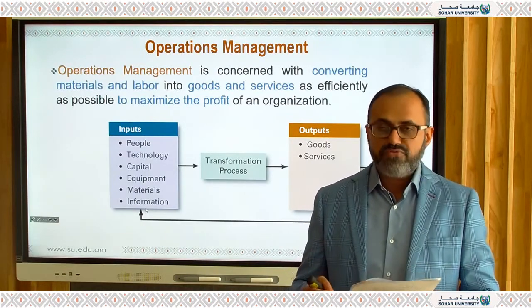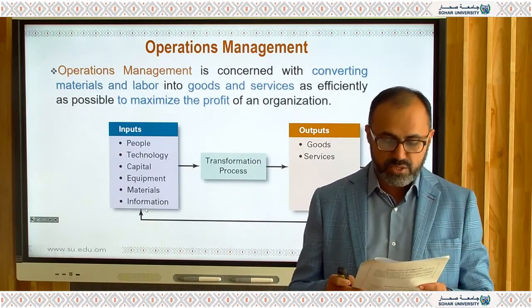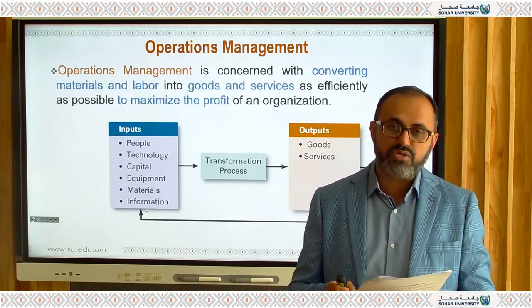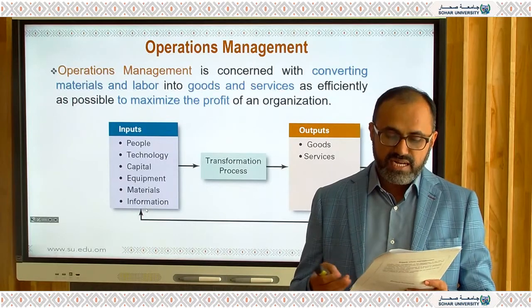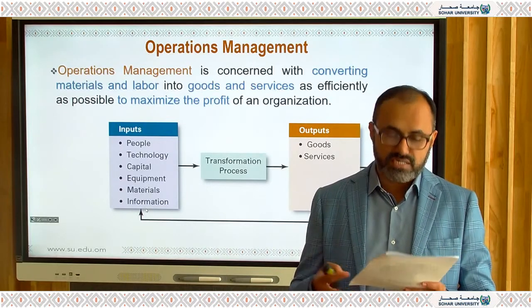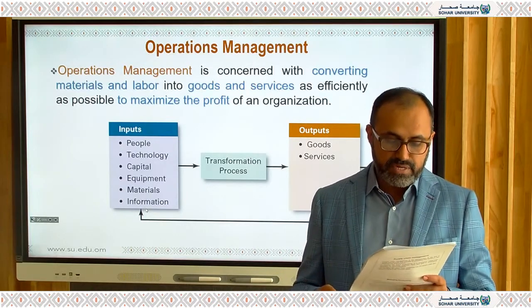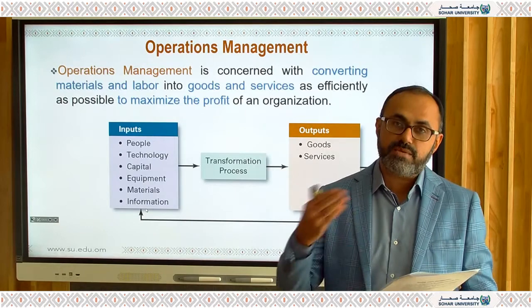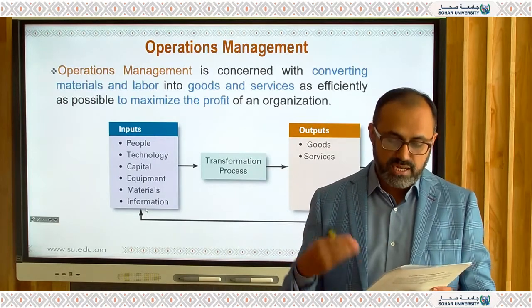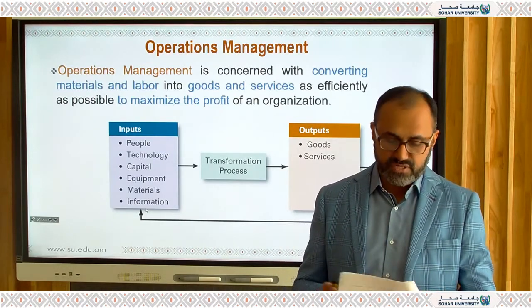If you see this diagram, there are some inputs and you do transformation processes, and finally the output is goods and services. People, technology, capital, equipment, material, and information are processed together to produce a good or a service.